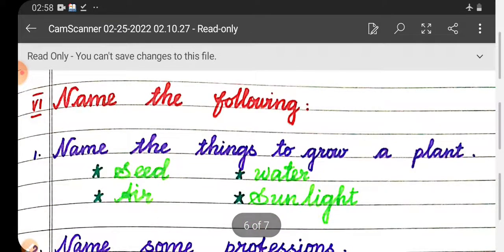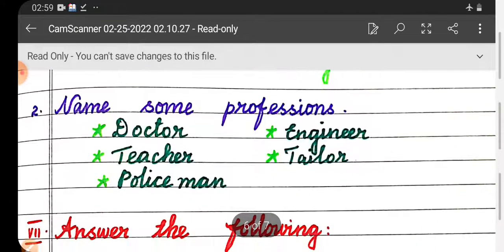Then sixth roman letter, name the following. First one, name the things to grow a plant. Seed, air, water, sunlight. Second one, name some professions. Doctor, teacher, policeman, engineer, tailor.